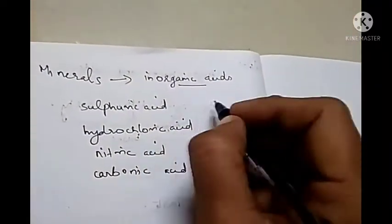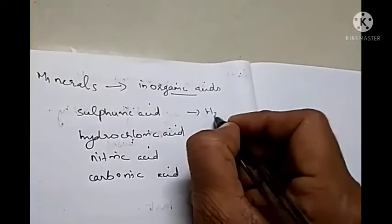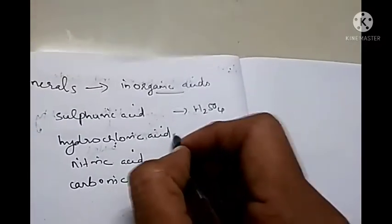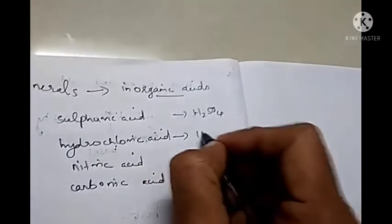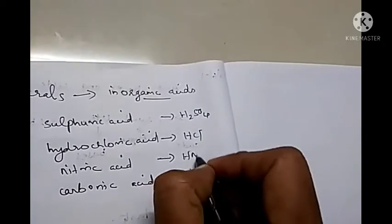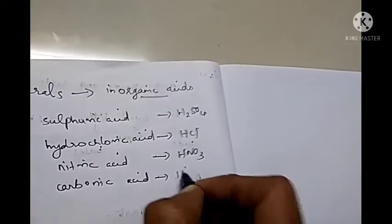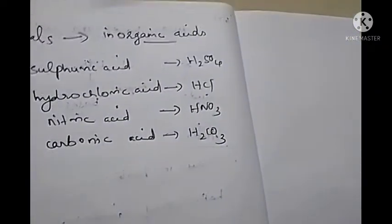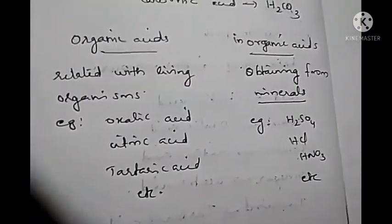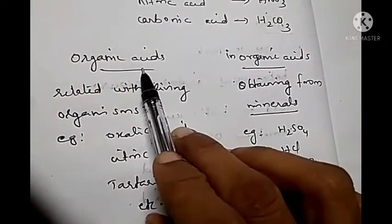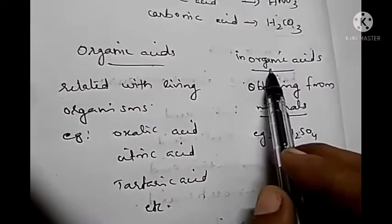The formula for sulfuric acid is H₂SO₄. Then, hydrochloric acid is HCl, nitric acid is HNO₃, and carbonic acid is H₂CO₃. These are the formulas of these acids. So, there are two different types of acids: organic acids and inorganic acids.